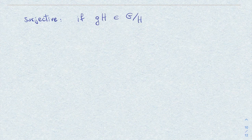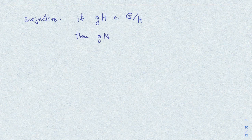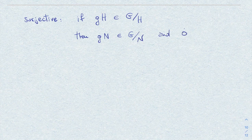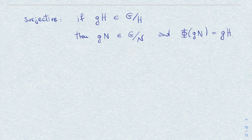Next, I need to show the map is surjective. This is almost tautological: suppose I take a coset g·H in the quotient G/H. Then g·N is a coset in G/N, and clearly φ(g·N) = g·H. So surjectivity is also checked.